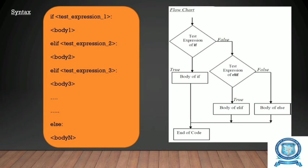This flowchart represents the elif statement. There are two different decision boxes — the first for the if statement. If the if condition is true, the body of if is executed and the code ends. If false, it moves to the next test expression — that is the elif statement. If elif is true, the body of elif is executed. If all if and elif conditions are false, it moves to the body of else, and then to the end of the code.